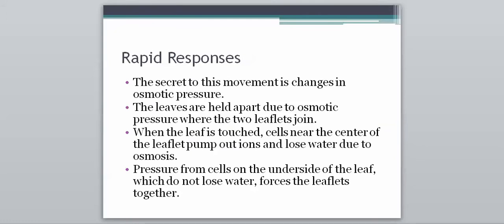And the reason why this happens is changes in osmotic pressure, which we've talked about before. So our leaves are held apart due to osmotic pressure where our two leaflets join. So osmosis is keeping those leaflets open. And when the leaf is touched, cells near the center of the leaflet will pump out ions and they will lose water due to osmosis. So it'll cause the water to move out of the leaves. And pressure from the cells on the underside of the leaves, which do not lose water, forces the leaflets to close together. So in the normal, when it's not getting touched, pressure from both sides is pushing, pressure is pushing up from the bottom, pressure is pushing down from the top. It keeps it open. But then when it touches, we lose that pressure from the top and the bottom will force it shut.